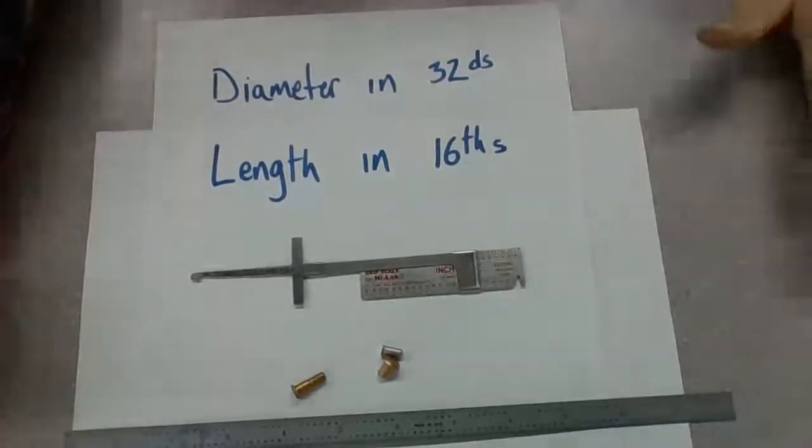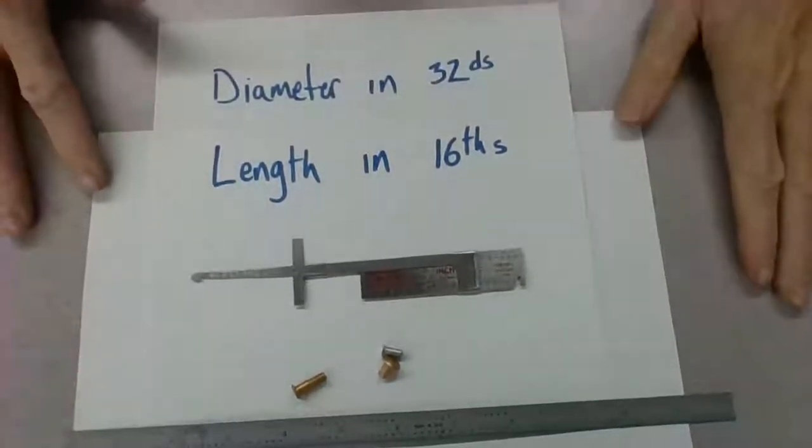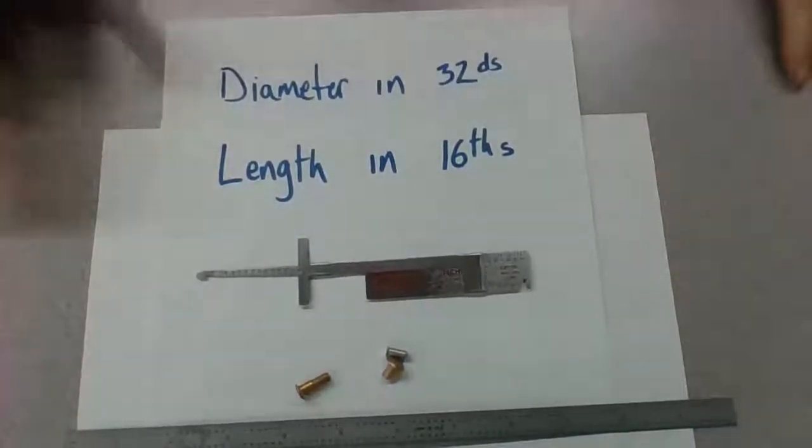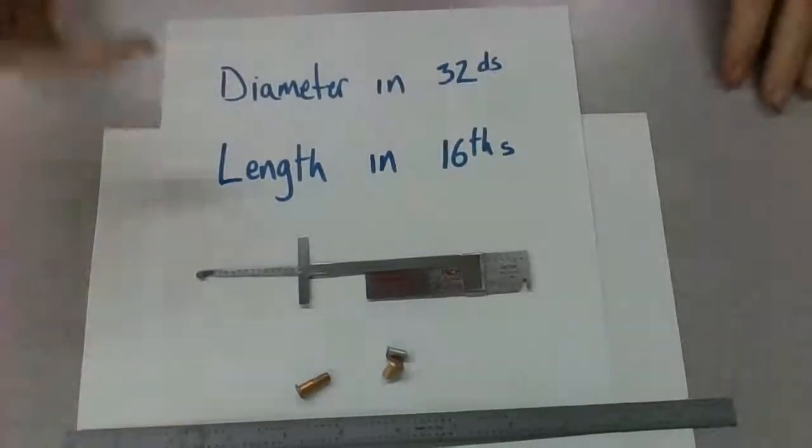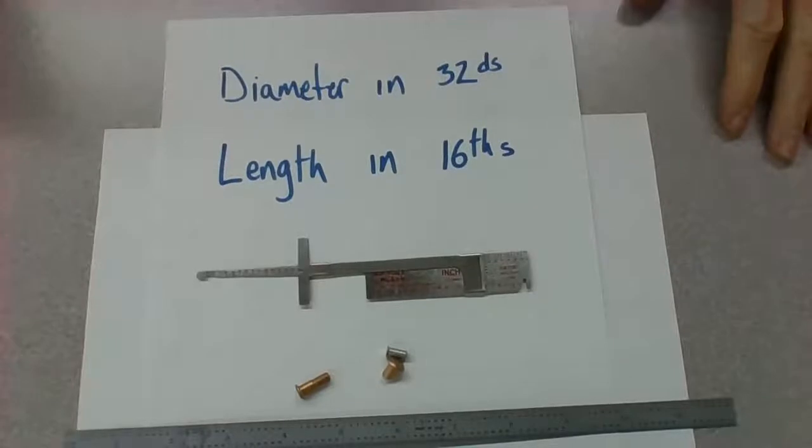Okay, so when we're dealing with rivets and measurements of rivets, it's always important to remember that the diameter of the rivets is measured out in 32nds of an inch, and the lengths of rivets are measured out in 16ths of an inch.